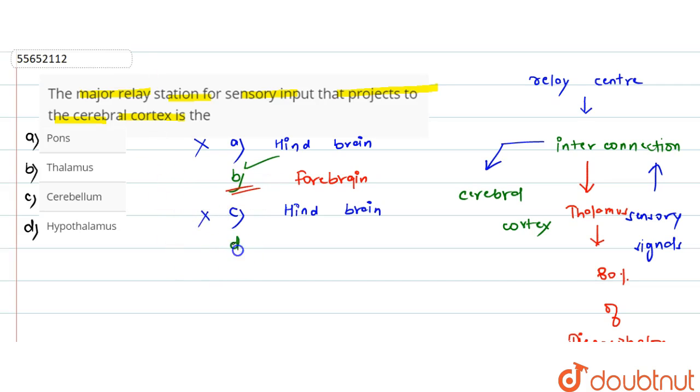Last option, given is hypothalamus. Hypothalamus is part of the diencephalon. But if we talk about the function of hypothalamus, then it controls body temperature. This is incorrect. The correct answer in this case, the option is B, thalamus.